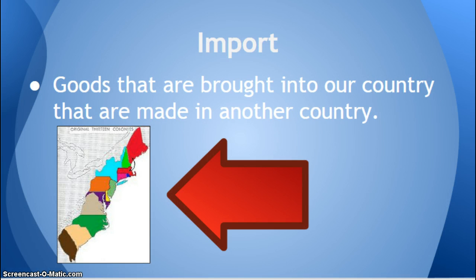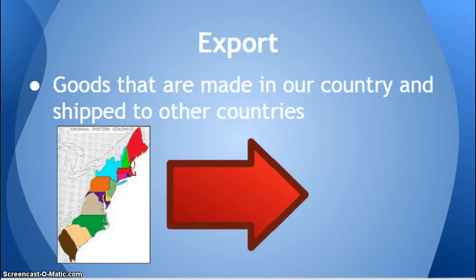The first economic principle is import. Imports are goods that are brought into a country that are made in another country. An example would be the manufactured goods that the colonies were bringing from England into the 13 colonies. Exports are the opposite — goods made in our country and shipped to other countries, like the raw materials produced in the 13 colonies and exported to Great Britain. An import brings something in; an export exits, it leaves our country.